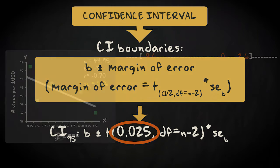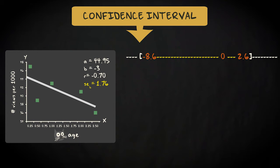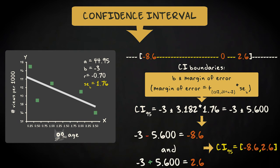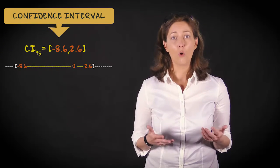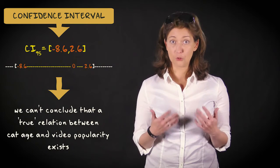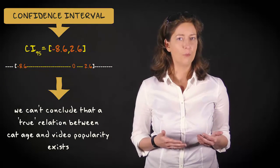In our example, the 95% confidence interval for the regression coefficient, which was minus 3, ranges from minus 8.6 to plus 2.6. We obtain these values by taking minus 3 and subtracting and adding the margin of error: t, which equals 3.182 for this sample size, times the standard error, 1.76, together equaling 5.600. As you can see, the interval is wide and contains 0, so based on this sample, we can't conclude that a true relation between cat age and video popularity exists.